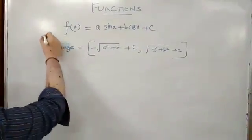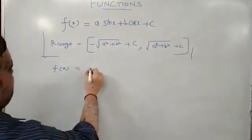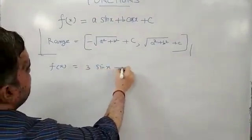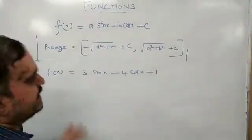I am going to give an example first. For example, f(x) = 3 sin x - 4 cos x + 1. Find out the range.